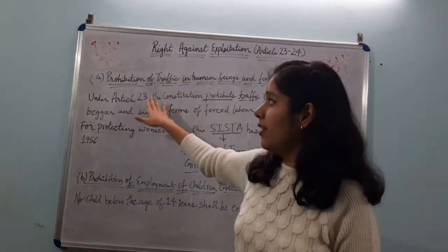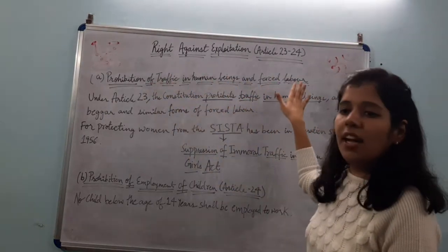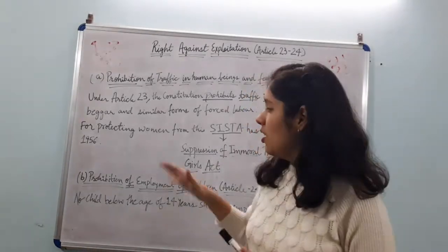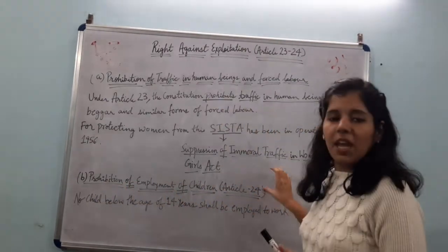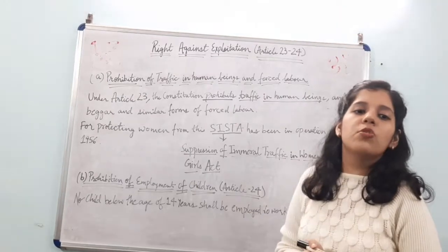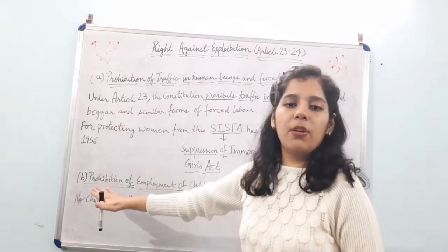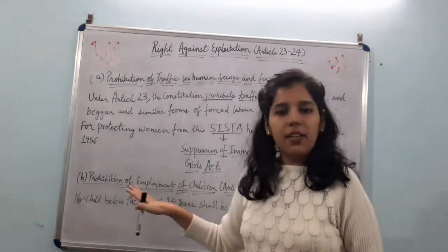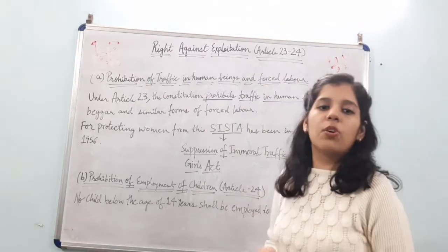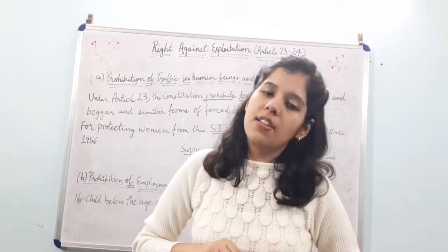Under Article 23, human trafficking and forced labor are both prohibited by law. Another very important article is Article 24, which talks about prohibition of employment of children. No child below the age of 14 years shall be employed to work. So you cannot make any child under 14 do any kind of work.